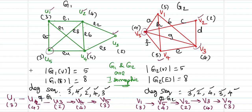So first check for your vertex set cardinality, then check whether the degree sequences match, and then try establishing a one-to-one correspondence between the adjacency of vertex sets.